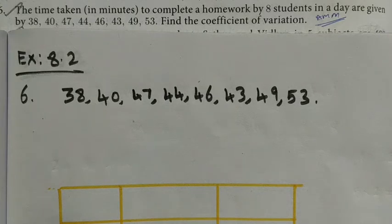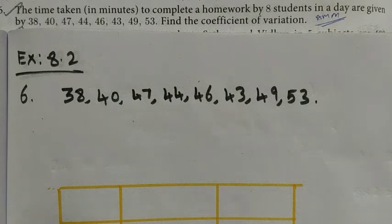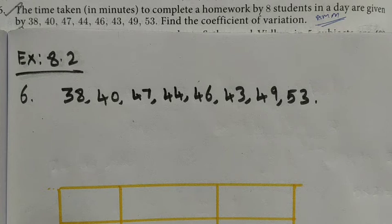Hi students, Class 10, Exercise 8.2, Question 6. The time taken in minutes to complete homework by 8 students in a day are given as 38, 40, 47, 44, 46, 43, 49, and 53. Find the coefficient of variation. To find the coefficient of variation, we first need to find the mean and the standard deviation.